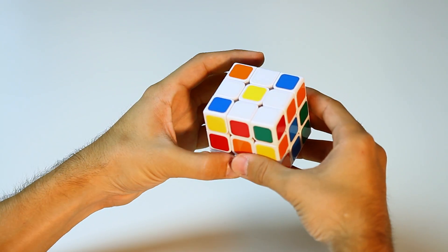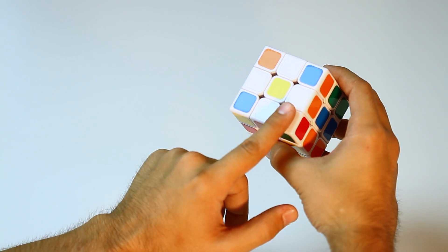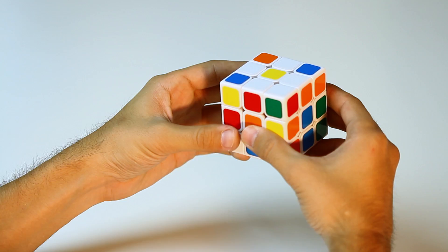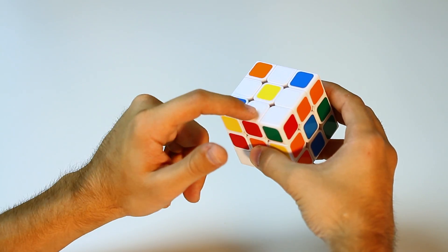All right, so now we have a daisy formation. Don't worry too much about this piece. The main things that we're looking at is this right here. We have the yellow in the center facing upwards, and then we have the four white edge pieces on every side.